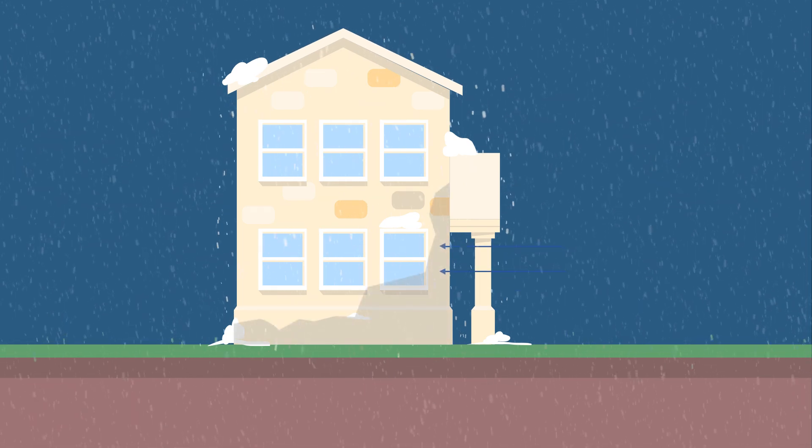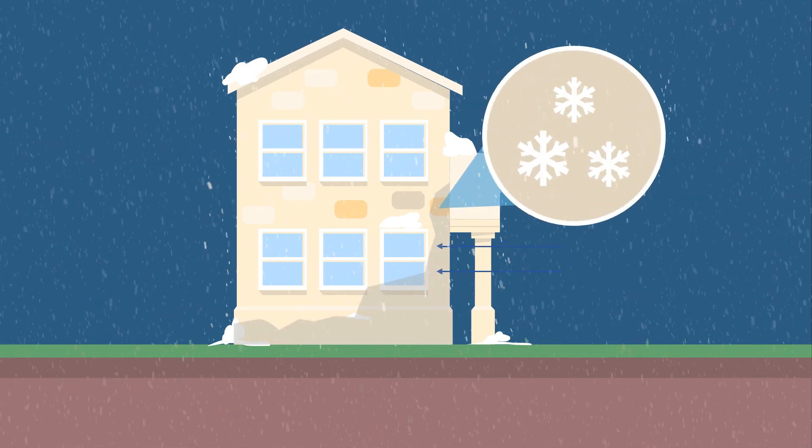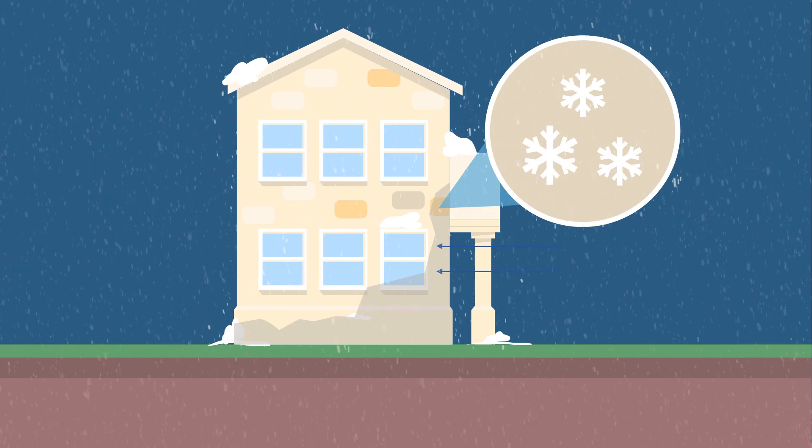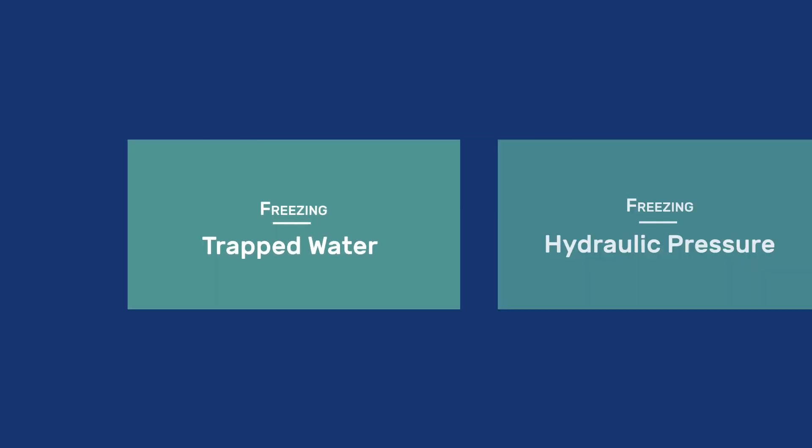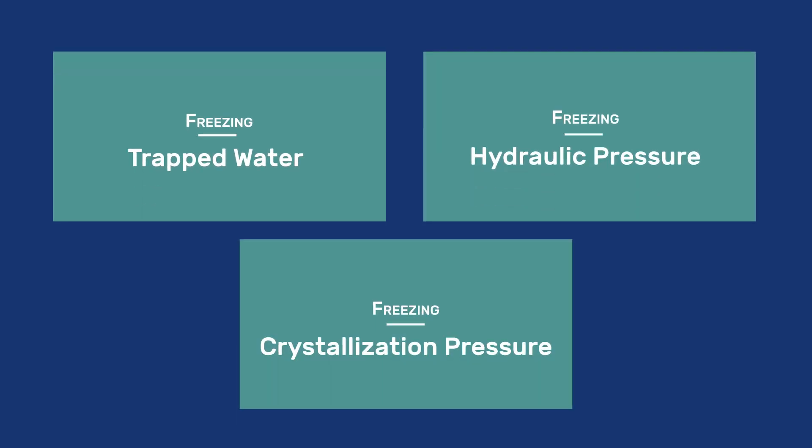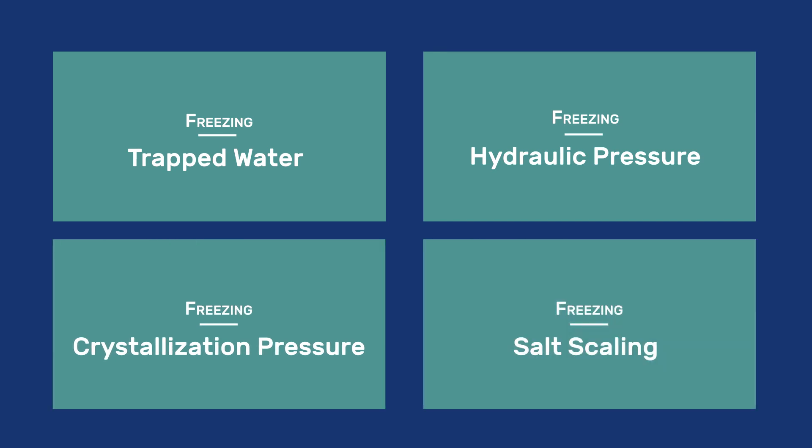In previous videos, we saw four different situations in which porous materials suffer frost damage: trapped water, hydraulic pressure, crystallization pressure, and salt scaling.